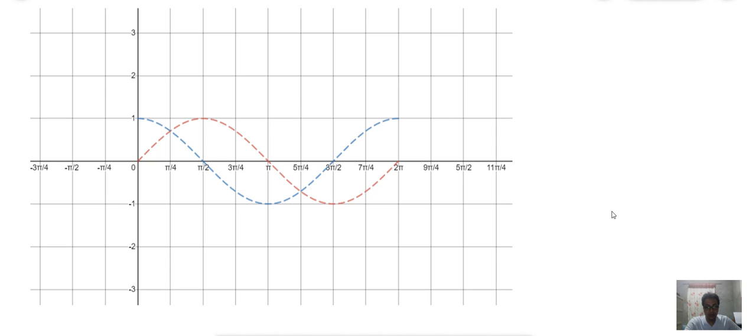As you can see in the whiteboard, the one graph in red color is the graph of f(x) equals sine x and the one in blue is the cosine function. So, the two graphs intersect at pi over 4 and 5 pi over 4.